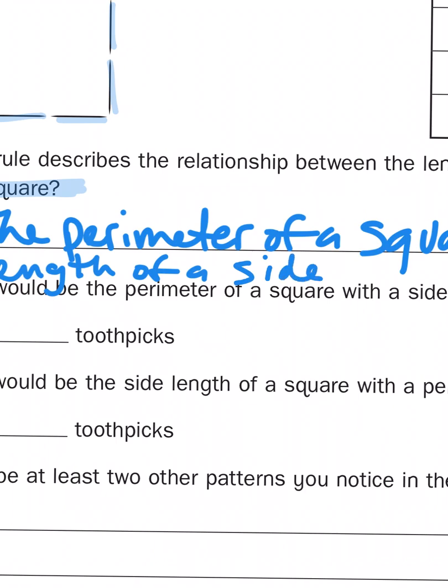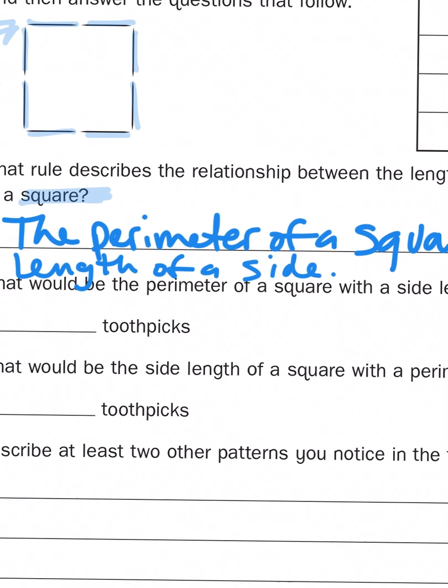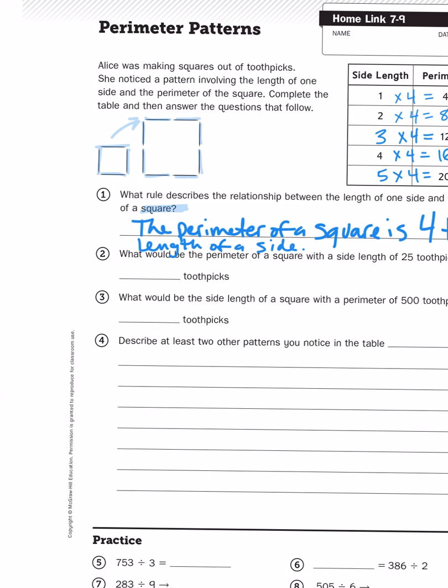Because squares have four sides, right? So if I know the measurement of one side, all I have to do to figure out the perimeter is to multiply that side's length times four.